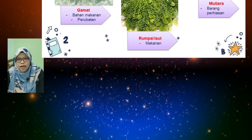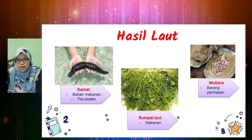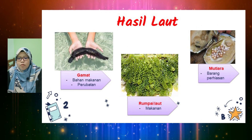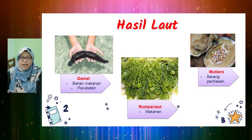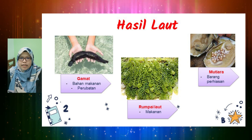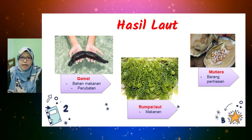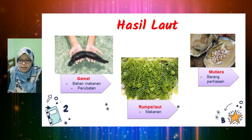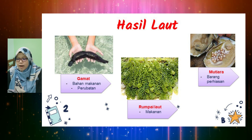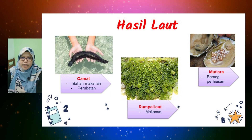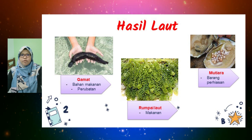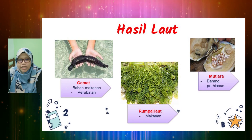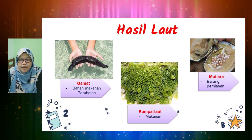Kita tengok hasil laut pula. Hasil laut ada tiga iaitu gamat, rumpai laut dan mutiara. Gamat dijadikan sebagai bahan makanan dan juga perubatan. Rumpai laut dijadikan sebagai makanan. Mutiara dijadikan sebagai barang perhiasan, dan mutiara amat terkenal di negeri Sabah.